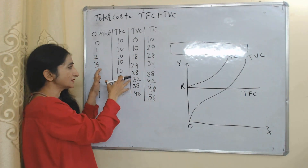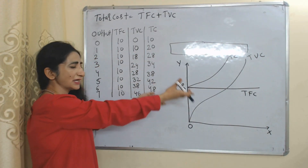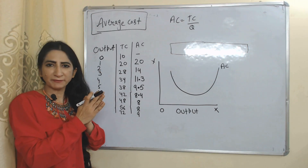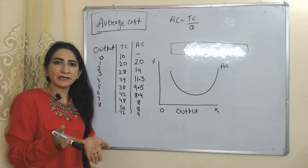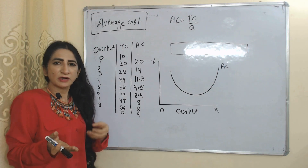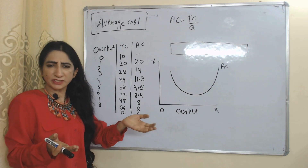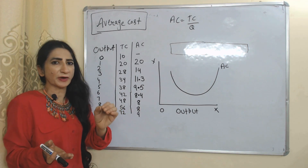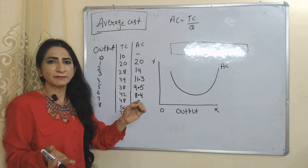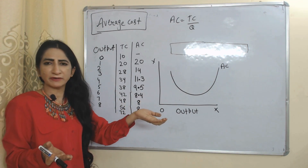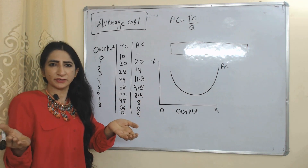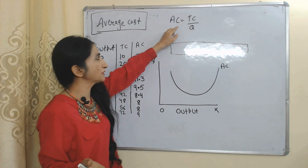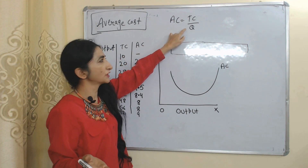If you convert this table into a diagram, you will get this. Now we are going to talk about average cost. Average cost is per unit cost. For example, if 6 units cost is equal to 30, then 30 divided by 6 equals 5 — this 5 is called average cost, or per unit cost.